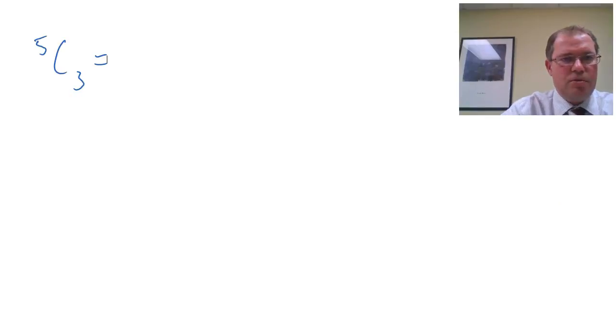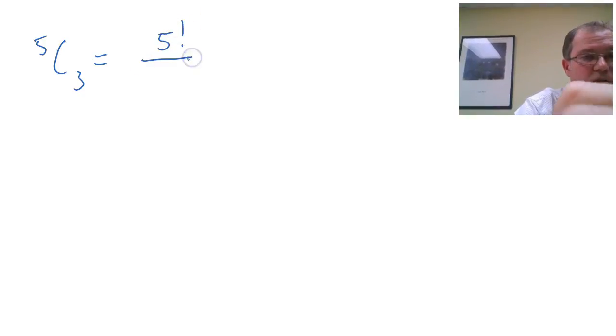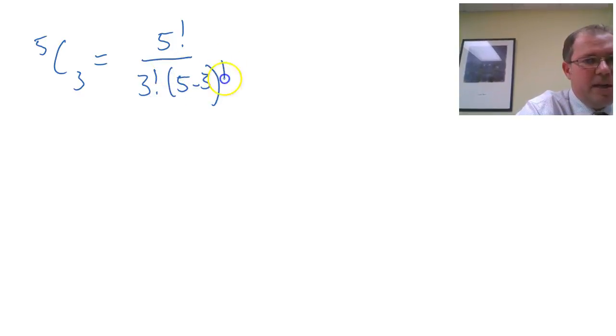So if we consider 5 choose 3, I think we're all getting good at this now. We think of 5 different items. So 5 factorials are all different. 3 of them are the same. So if 3 of them are the same, the other 2 have to be the same. 5 minus 3 factorial. Because if I've got 3 a's, I have to have 2 b's. 5 minus 3.